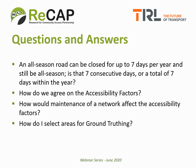Here we'll go over some frequently asked questions relating to accessibility factors. First question: an all-season road can be closed for up to seven days per year and still be all-season — so is that seven consecutive days or a total of seven days within the year? The answer is a total of seven days over the course of a year, not necessarily consecutive days. So for example, a road could be closed several times for short periods, but as long as the total of these closures does not exceed seven days in a year, it's still considered to be an all-season road.